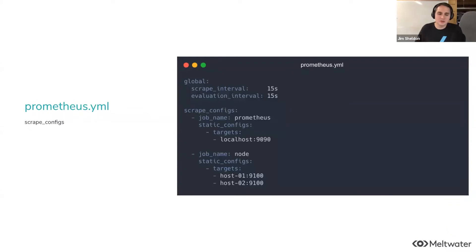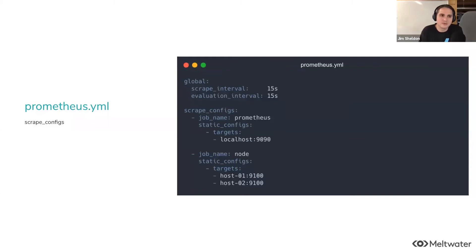Here's a very basic Prometheus YAML that scrapes itself. Prometheus has its own metrics endpoint at port 9090 at /metrics — /metrics is always the default. There's also an example with two hosts running node exporter, which provides host-level metrics. In a simple world with a static list of hosts, simple config like this works fine.